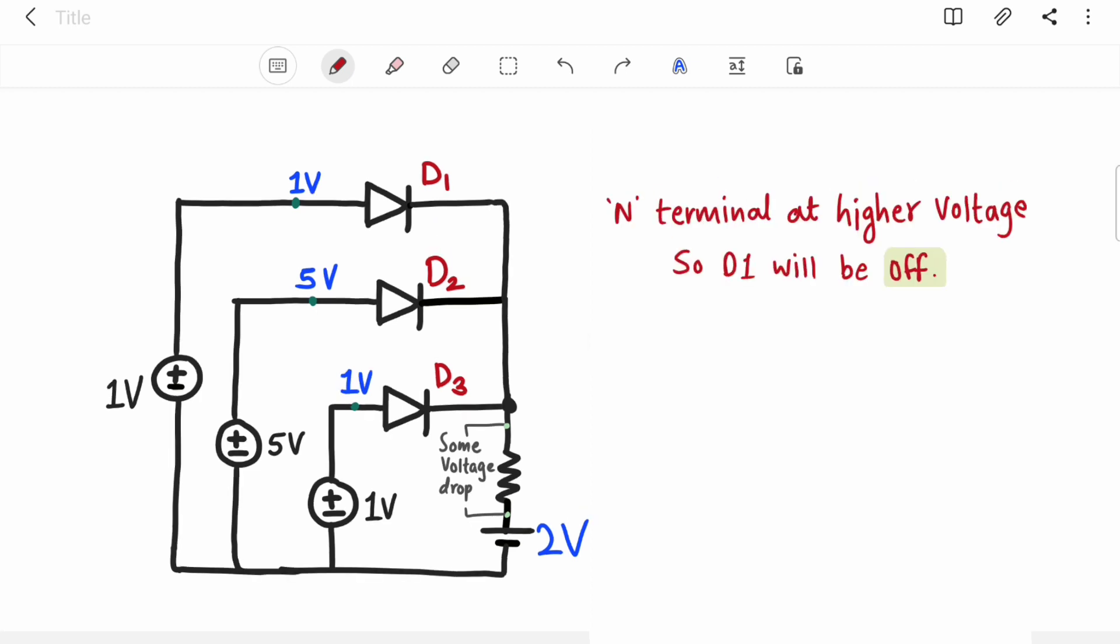Now let's take a look at diode D2. Positive terminal is at 5 volt and negative terminal is again at 2 volts. Now positive terminal is at higher voltage so D2 will be short circuit. D2 will conduct, so your answer is D2.